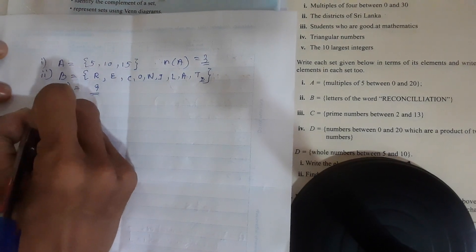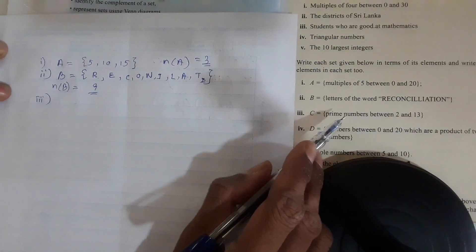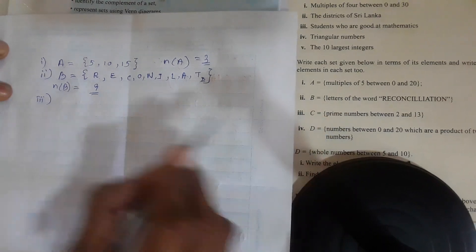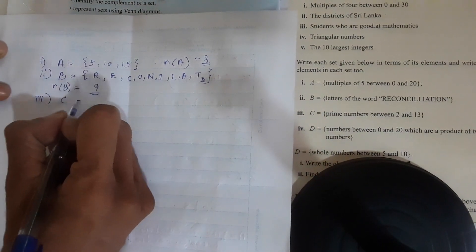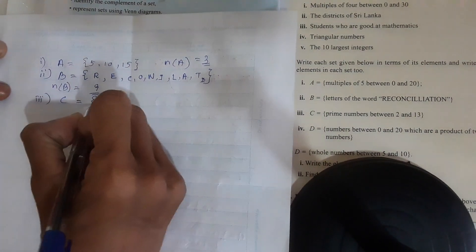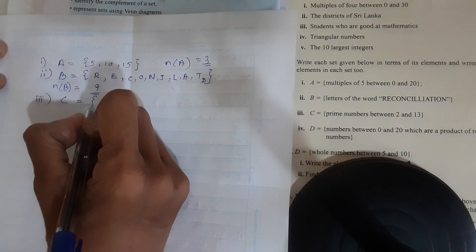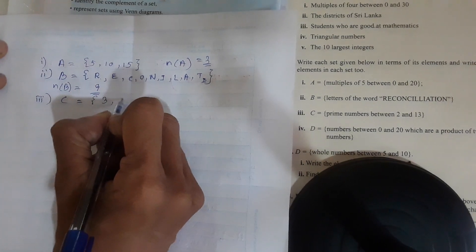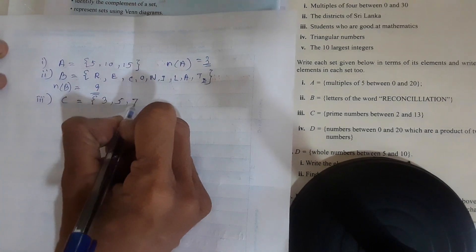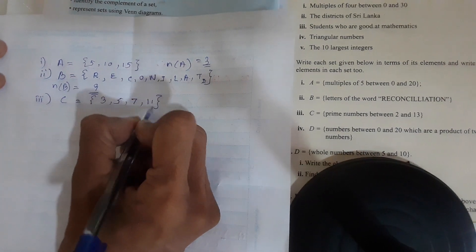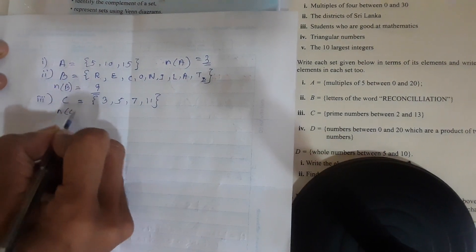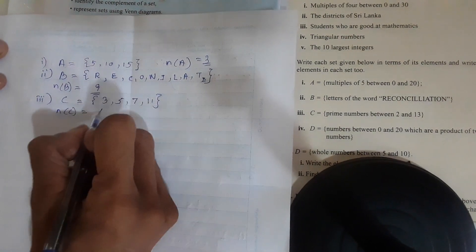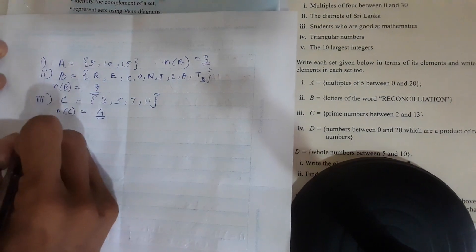Third one: prime numbers between 2 and 30. Set C, between 2 and 30. We can't write 2. 3, 5, 7, and 11. Number of C: 1, 2, 3, 4.